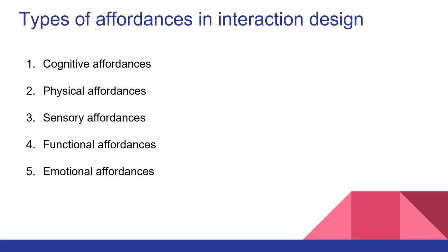Let us see the different types of affordance in interaction design. There are 5 types of affordance in interaction design: Cognitive, Physical, Sensory, Functional, and Emotional.